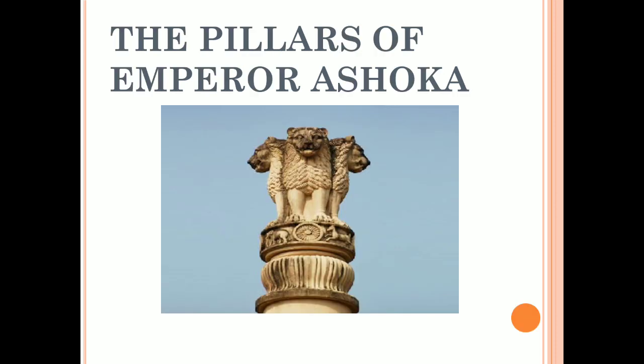The next monuments are the Pillars of Emperor Ashoka. Emperor Ashoka constructed many tall pillars with inscriptions on them. An important fact about these pillars is that they were made from a single piece of stone. He constructed and put up these pillars in many parts of his kingdom.